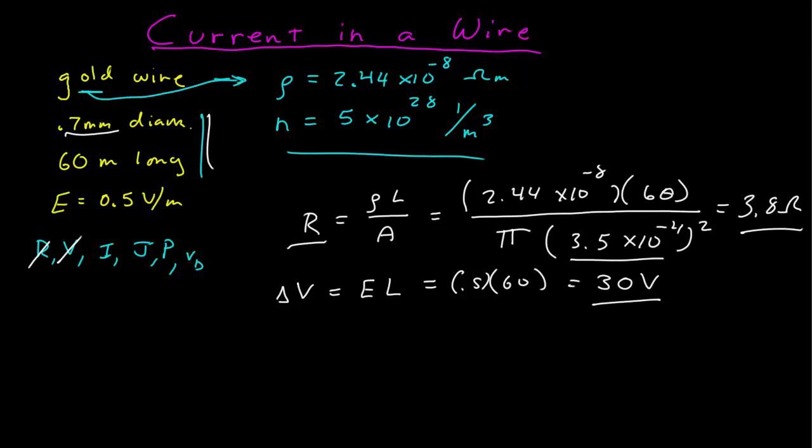Gold can be approximated as an ohmic material, which allows me to now get to the current itself because I know that delta V is equal to the current times the resistance, and so I is equal to V over R, which is 30 divided by 3.8 or 7.89 amps. So there's the current.